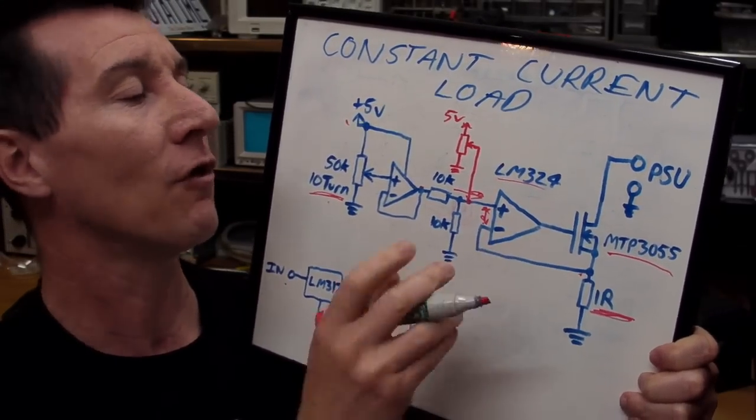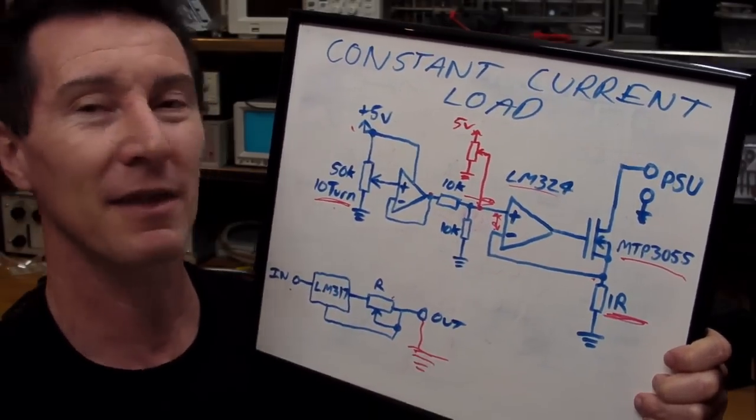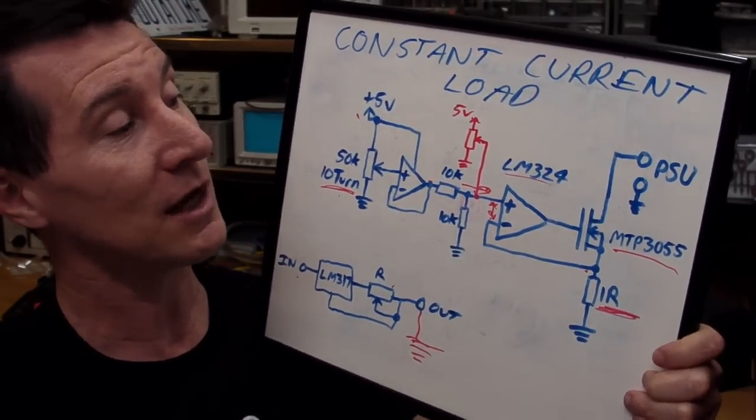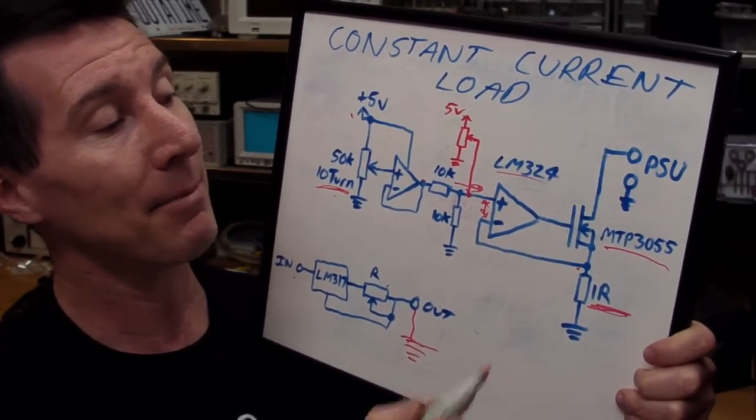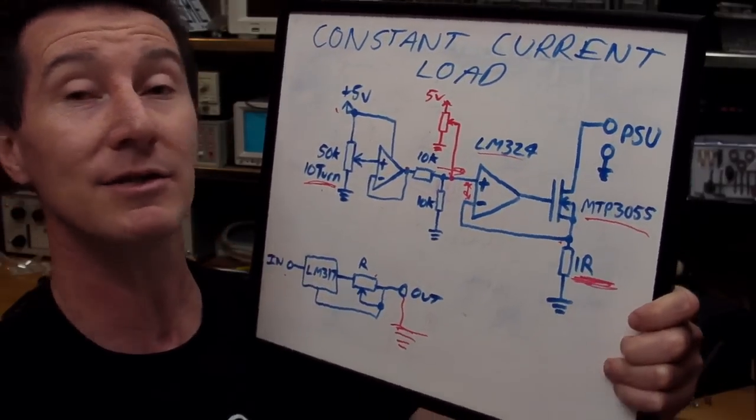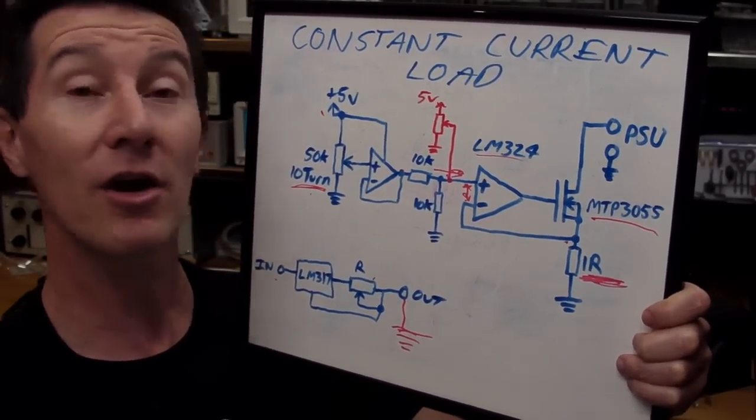But the LM324, there's issues with it, can't go to its supply rail and stuff like that. But we won't go into that, use a precision op-amp if you want that sort of stuff, rail-to-rail op-amp. And plus, there's issues with the FET. But anyway, I should easily be able to get 0 to an amp out of this particular circuit.